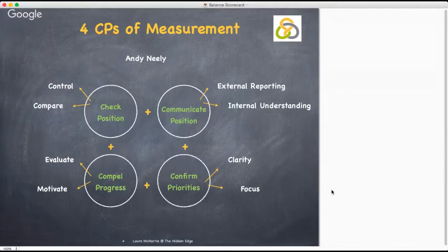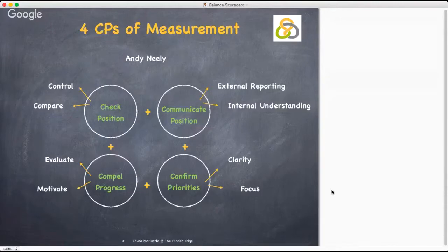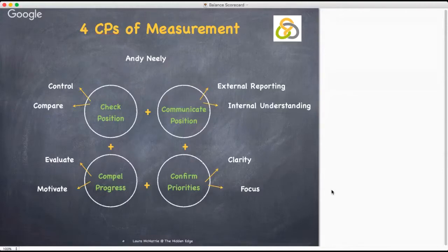Neely describes the three roles of management in communicating as complying, checking, and challenging. You can look at the four CPs of measurement and explore them further around the comply, check, and challenge roles. The four Cs are sequential: position has to be checked before it can be communicated; plans and priorities cannot be confirmed until performance data has been shared; and progress cannot be compelled until priorities have been identified.